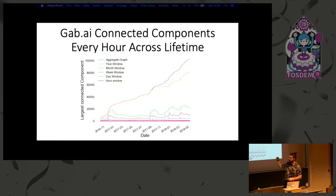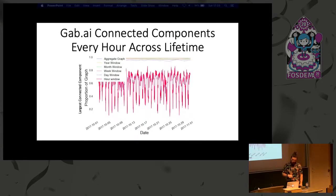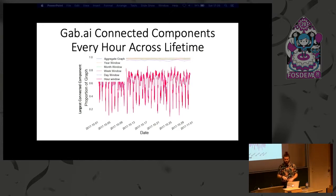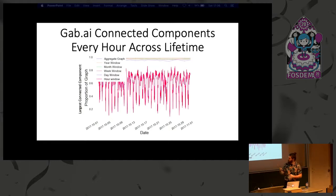The interesting thing is that even though you're running the same algorithm, you notice very different patterns. The aggregate kind of shows the connected component continuously grows. Whereas if you look at something like the month, you have these peaks of interest — this is actually Donald Trump's election, this is the Charlottesville riots — peaks of activity when people join the network and start using it, and then it drops down again. If we zoom in to the hour scale, everything above a window size of a day has the largest connected component at almost 100% of the graph. However, for an hour you get this lovely diurnal pattern as people go to sleep and wake back up. Even doing the same query on different lenses or views of the graph gives you very different results.